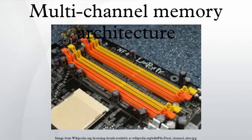Dual-channel architecture requires a dual-channel-capable motherboard and two or more DDR, DDR2-SDRAM, or DDR3-SDRAM memory modules. The memory modules are installed into matching banks, which are usually color-coded on the motherboard. These separate channels allow the memory controller access to each memory module. It is not required that identical modules be used, but this is often recommended for best dual-channel operation.